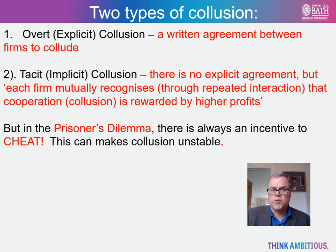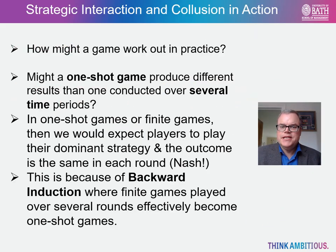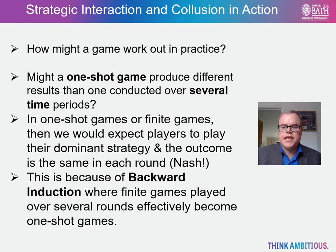This makes collusion inherently unstable. The real question is how collusive actions might play out in real-world markets, and the answer depends largely on whether the game is played once, over a finite number of periods, or indefinitely. In one-shot or finite settings — for example auction environments or where the government invites competitive tenders — we would expect players to play their dominant strategy and end up at the Nash equilibrium in each round. This is because of backward induction: a process of reasoning backwards in time from the end of a problem to determine a sequence of optimal actions. In finite games, whether one period or twenty, each player will cheat in every round and collusion is not feasible.